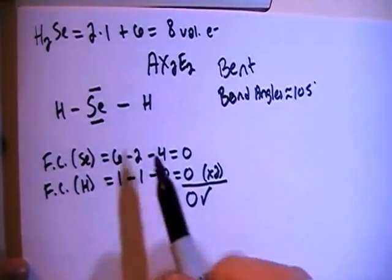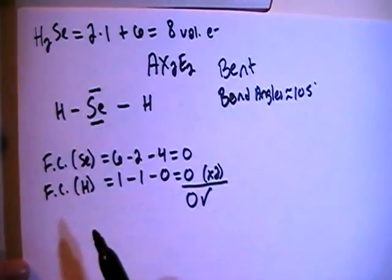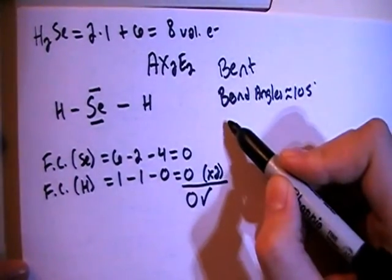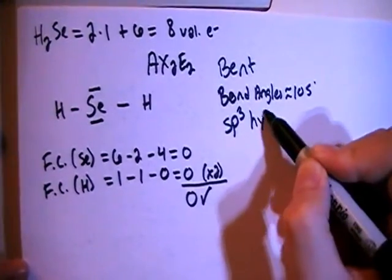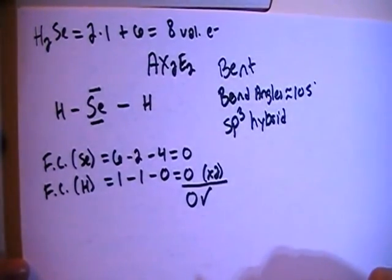In terms of hybridization, looking at the central atom, you have one, two, three, four possible bonding sites or electron groups. So that means four hybrid orbitals. So you're going to need SP3 hybrid, one S and three Ps, that's four total orbitals.